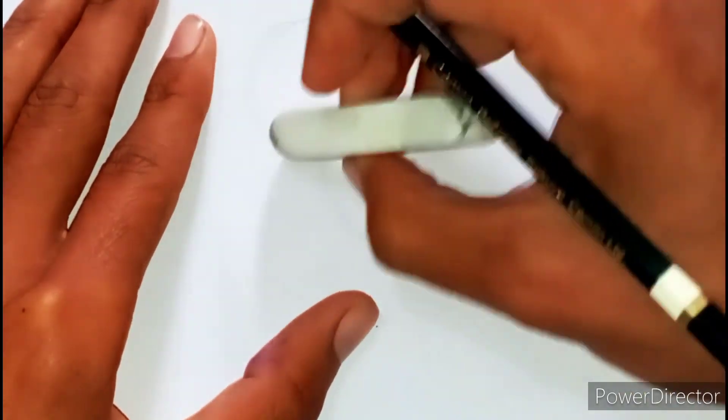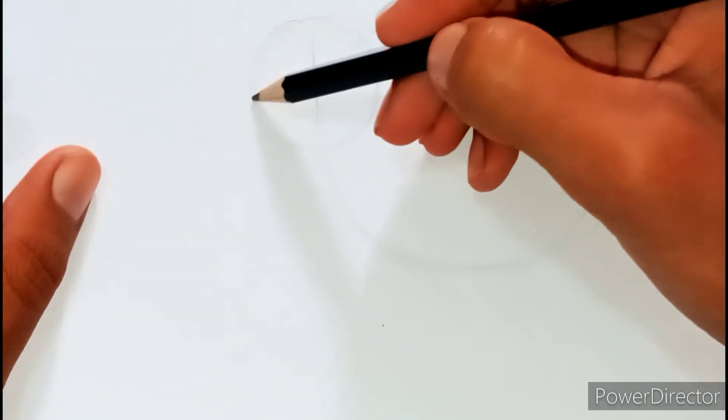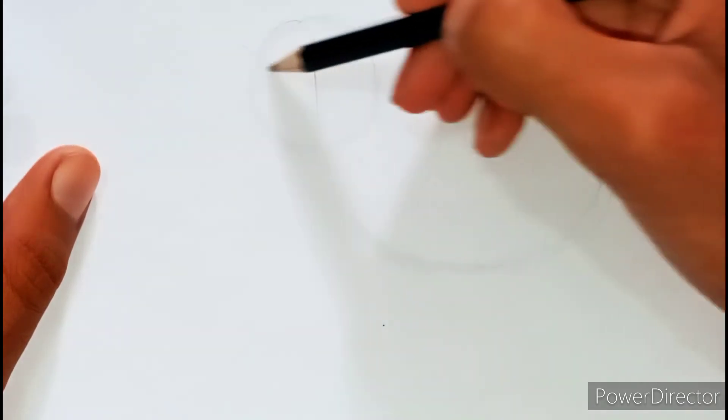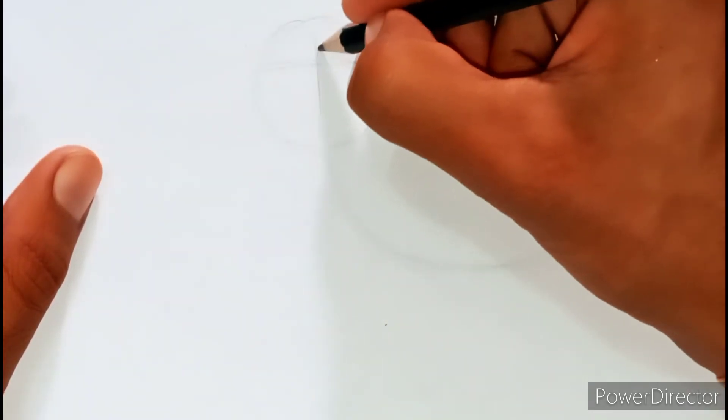Let me erase it. Now, I draw a centerline and eye line. Eye line is just a bit upper from the middle.